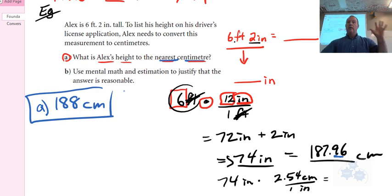Okay, everybody, any questions about that? Alright. Now B says use mental math and estimation to justify that the answer is reasonable.